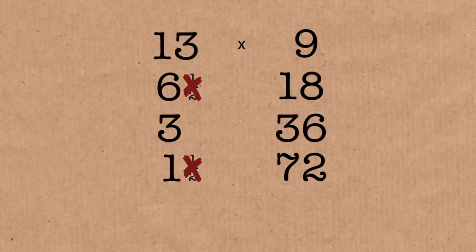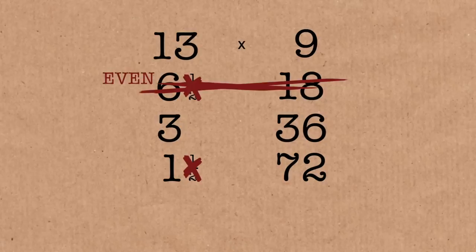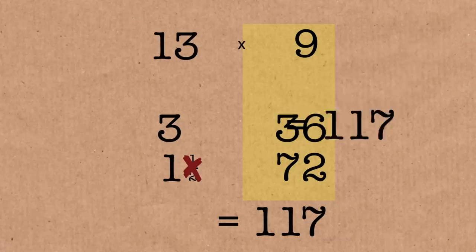But there's an even one here on the left-hand side. So that line goes out. And now when you add them up, 117. And 13 times 9 is also 117. Triple figure, quadruple. Any figures you like.